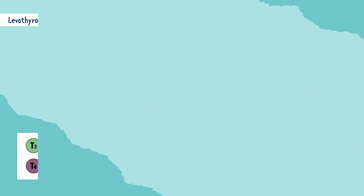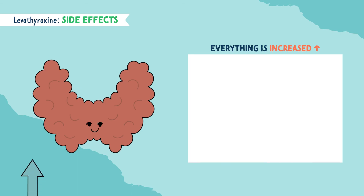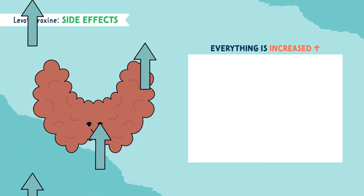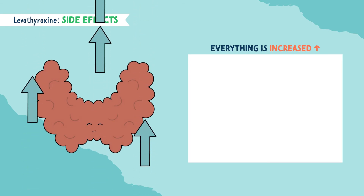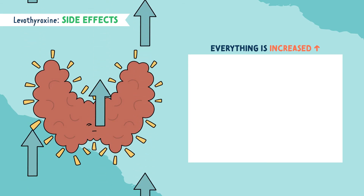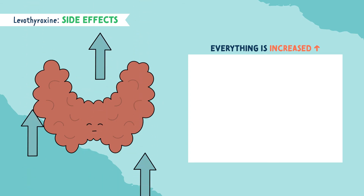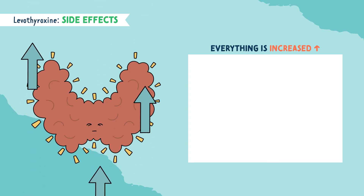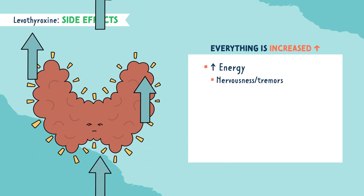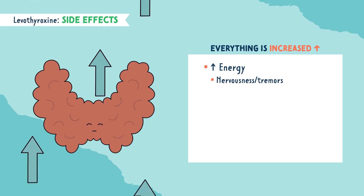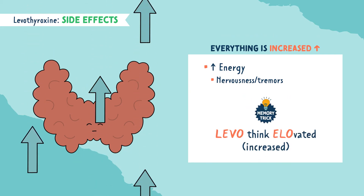Let's talk about the must-know side effects of levothyroxine. Although this medication works to increase thyroid levels, the medication can exert its effect too much, leading to hyperthyroidism. So the side effects will be the same as hyperthyroidism. If you remember from the thyroid lecture, thyroid hormone gives you energy, so everything will be increased. You can remember this by thinking: levo is elevated.